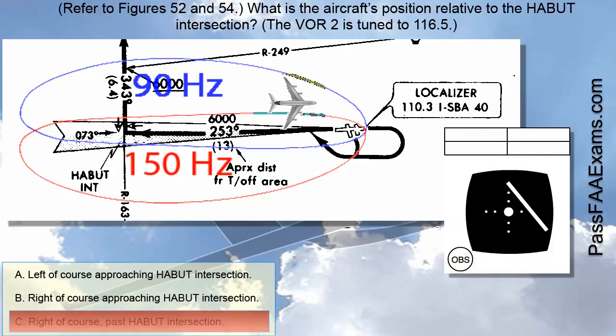One way to track the localizer while flying is: If inbound, you are the ball, the large dot at the center of the VOR, and you need to fly to the needle. In this case here, you would need to fly right. And, while outbound, you are the needle and need to fly to the ball. In this case here, left.